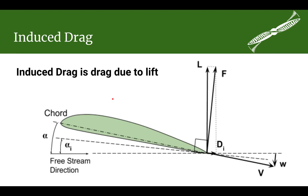Now we come to the last type of drag we want to talk about: drag that is induced due to lift. This applies to the main wing, a canard, the tail, the rudder, etc. — we use the same mechanism for determining lift-induced drag for all of these. What we are going to talk about is not an accurate drag estimation because there are factors of lift-induced drag that we will not fully take into account, so the drag is generally going to be greater than the equation we will come up with.